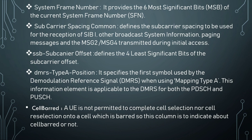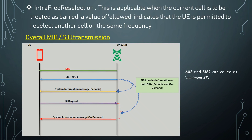Cell barred indicates when the UE is not permitted to complete cell selection onto a cell which is barred. Intra-frequency reselection is applicable when the current cell is to be treated as barred — the value 'allowed' indicates that the UE is permitted to reselect another cell on the same frequency. These are the parameters carried by the MIB.